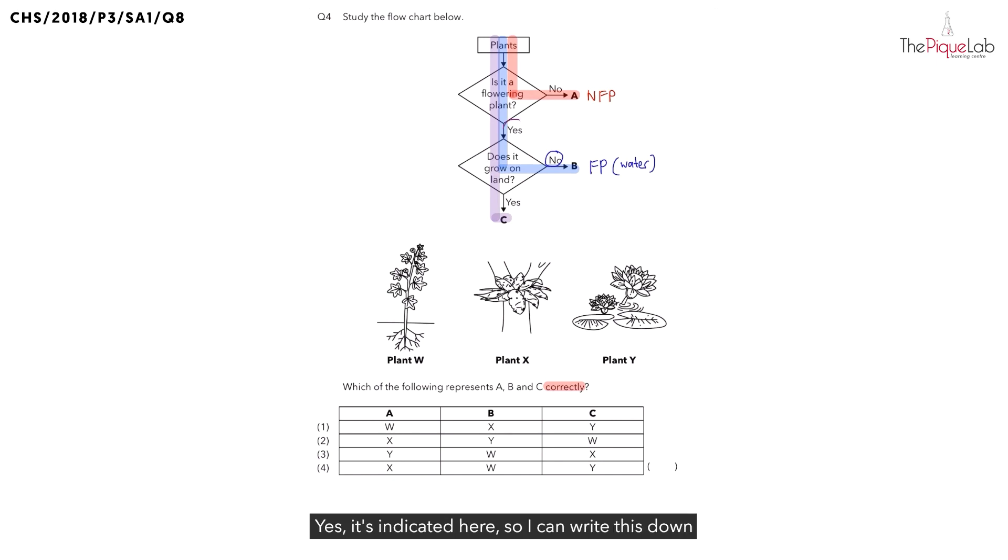Yes. It's indicated here. So I can write this down. And does C grow on land? Also, yes. So let's write this out. C is a flowering plant that grows on land.